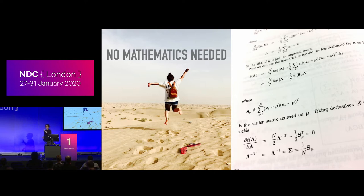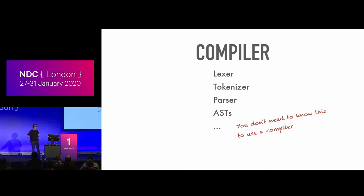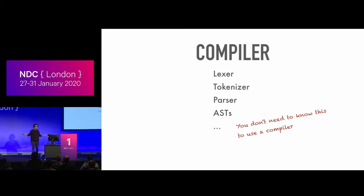But there are small caveats. I like to use the metaphor of a compiler — when you're doing machine learning you just call a function, it does the magic. When you're programming you don't need to understand how the compiler works: scanning, tokenizing, parsing, constructing ASTs — it's all done behind the scenes. Machine learning is trying to get to the same stage, but unfortunately it's not there yet.